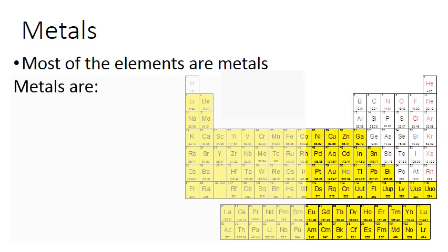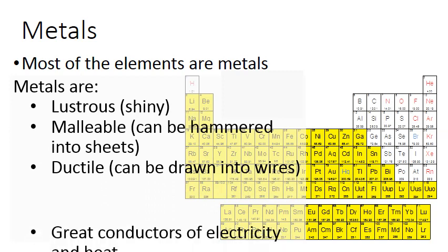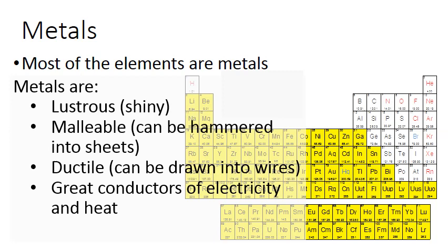And metals have specific properties. Metals are shiny or lustrous. They are malleable, which means they can be hammered out into sheets. They are ductile, which means they can be drawn out into wires. They are great conductors of both electricity and heat. And they are generally solids at room temperature, with the exception of mercury, which is Hg, number 80.